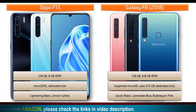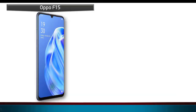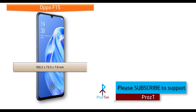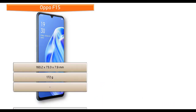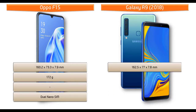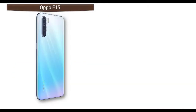Oppo F15 is produced in black and unicorn white colors. In terms of dimensions, it measures 160.2 x 73.3 x 7.9 mm and weighs 172 grams, with dual nano SIM option. Samsung has produced the Galaxy A9 in caviar black, lavendar blue, and bubblegum pink colors, and it measures 162.5 x 77 x 7.8 mm and weighs 183 grams, with dual nano SIM option.